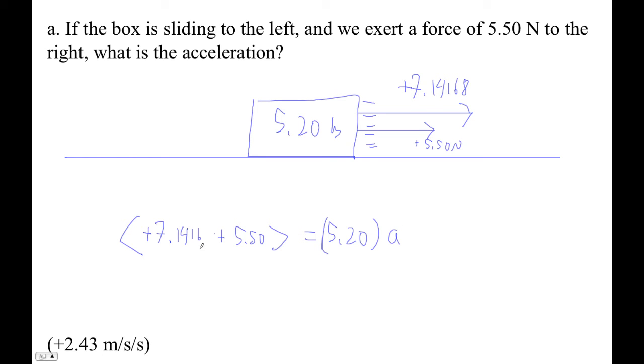So this will be a positive acceleration, this will actually be decelerating. So store that, and let's go. 7.1414 plus 5.5 divided by 5.2, and this ends up being positive 2.431 meters per second squared.